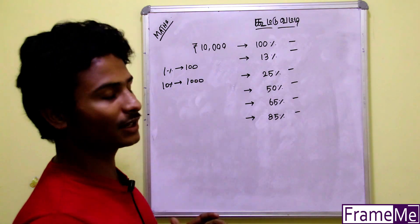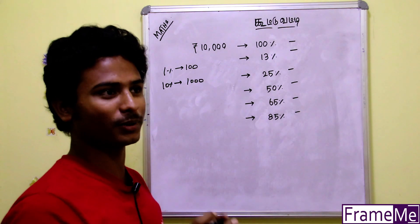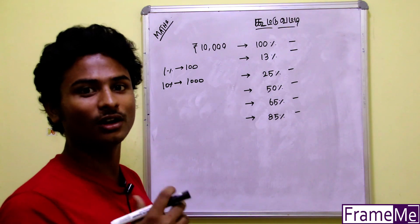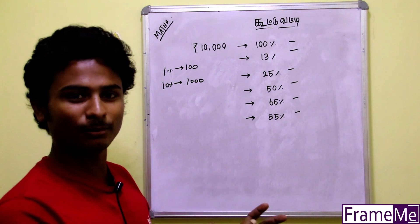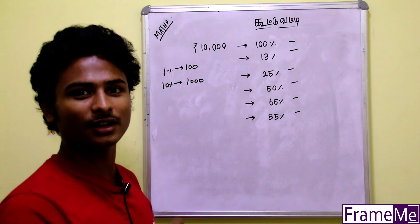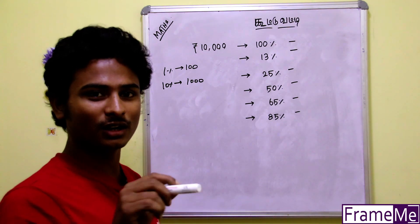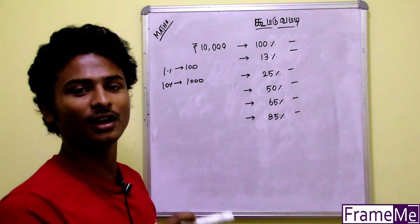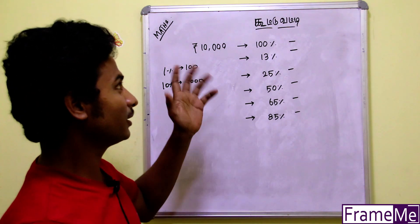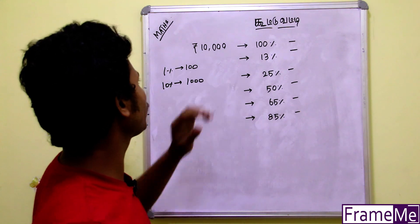We will deposit an amount. We will deposit for a 10-year period. So how do we calculate the amount? Let's see here — there is an amount.